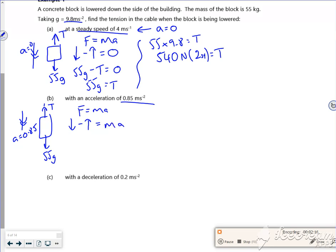This time, 55g - T = 55(0.85). So T = 55g - 55(0.85). When you put that in your calculator and round to 2 sig figs, it's 490 newtons.